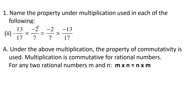Part 2: 13 upon 17 into minus 2 upon 7 is equal to minus 2 upon 7 into minus 13 upon 17. The answer is: under the above multiplication, the property of commutativity is used.